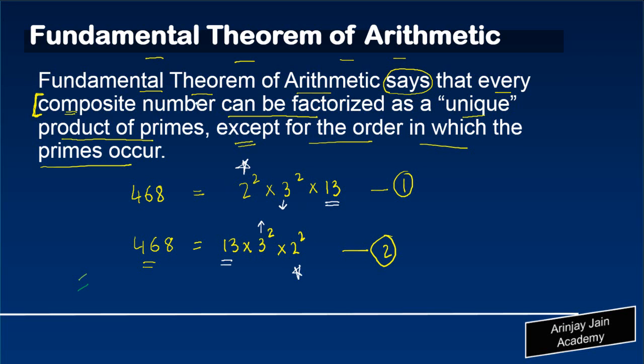Now, let's see the equation. The equation says that for every composite number, which is 468 in our example, can be factorized as a product of its prime numbers, as a unique product of primes. So this combination is unique. The elements of this combination are the same.